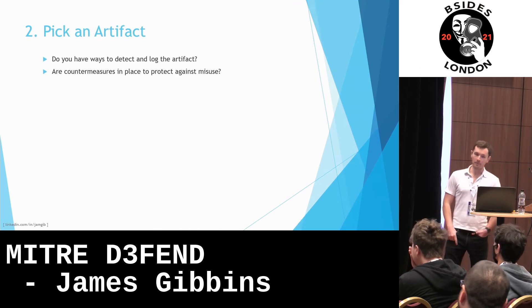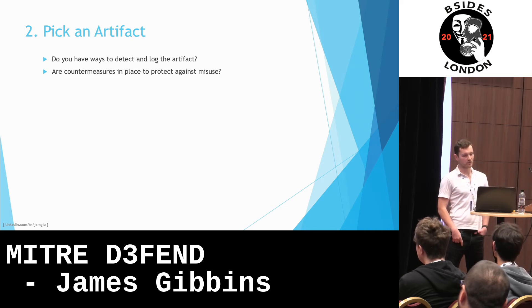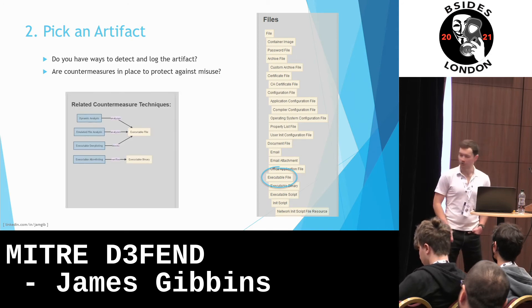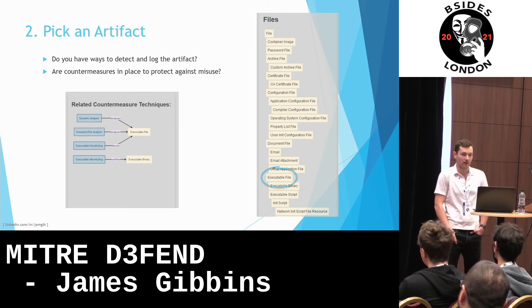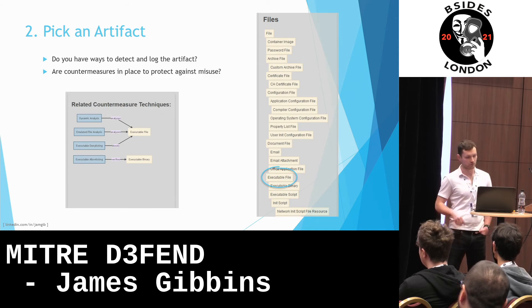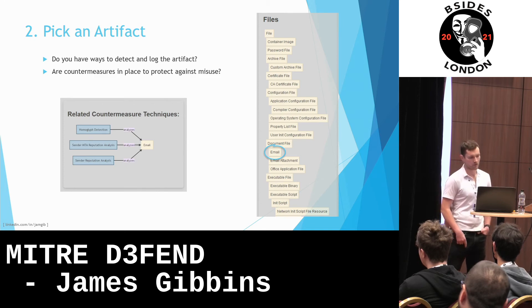Another way is by picking an artifact: do you have ways to detect and log the artifact? Are countermeasures in place to protect against misuse? For example, take executable files — do you have allow-listing so that only known good executables can run? If not, do you have deny-listing to prevent unwanted ones? Or, failing that, do you have dynamic analysis like a sandbox, or emulated file analysis to check the file before it runs? This could be good in combination with email attachments. And talking of email, have you got homoglyph detection — making sure the email comes from bsides.com and not b5ides.com? Do you have reputation analysis, both for the sender and the sender's mail transfer agent?